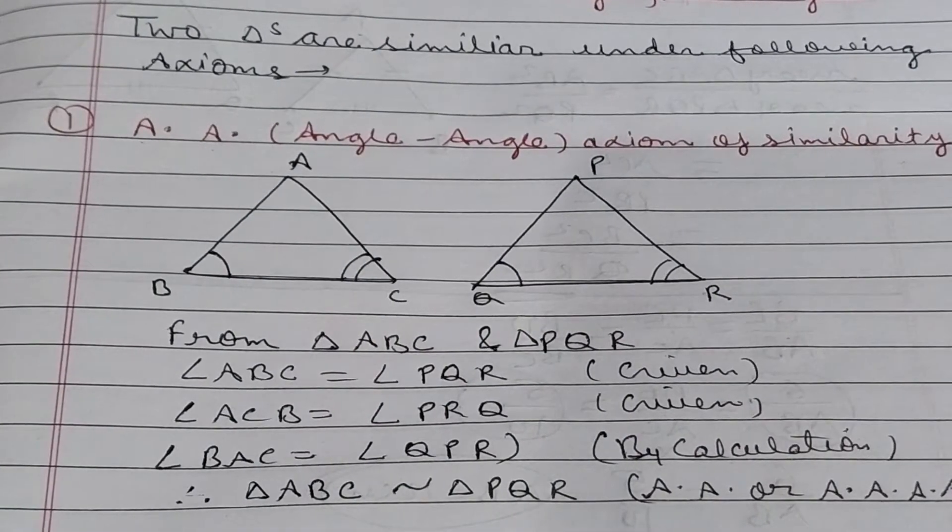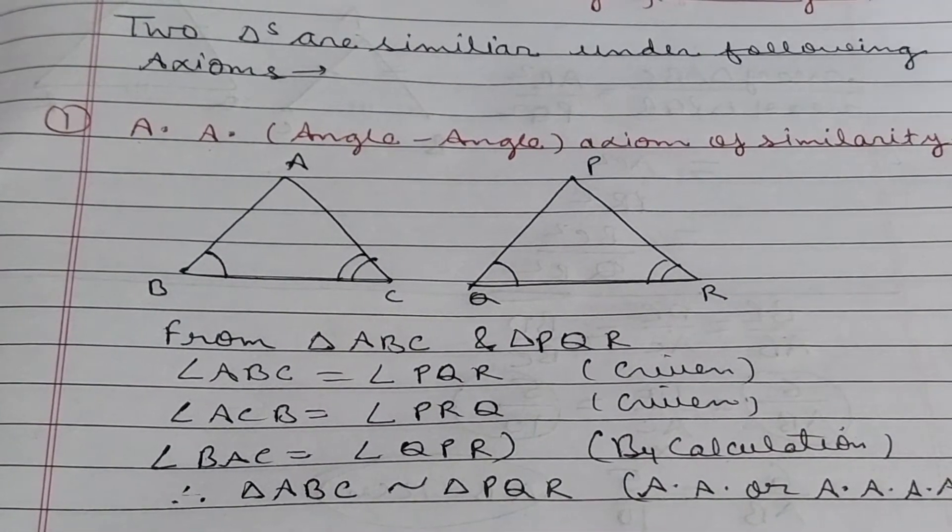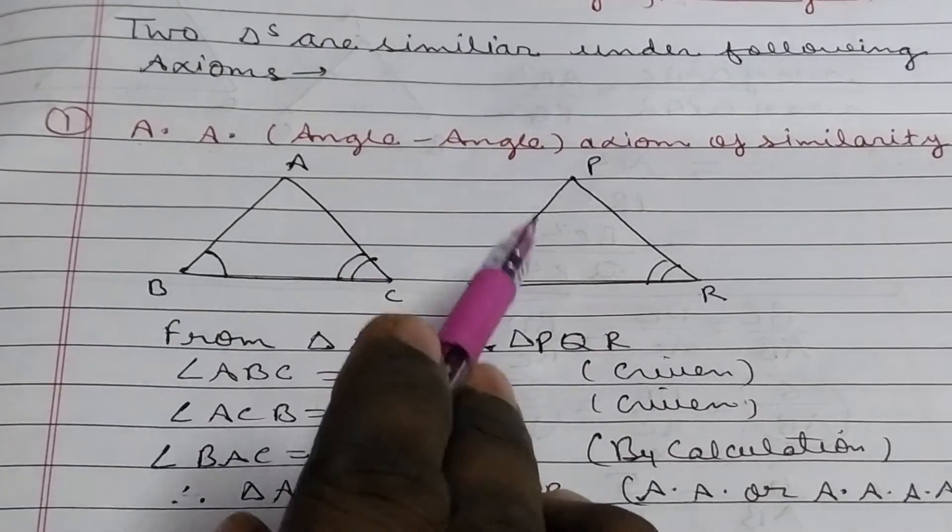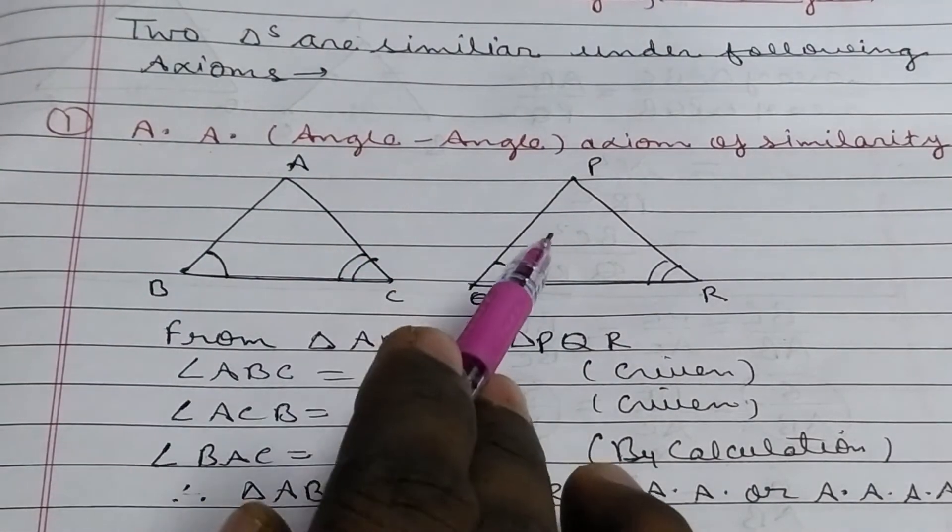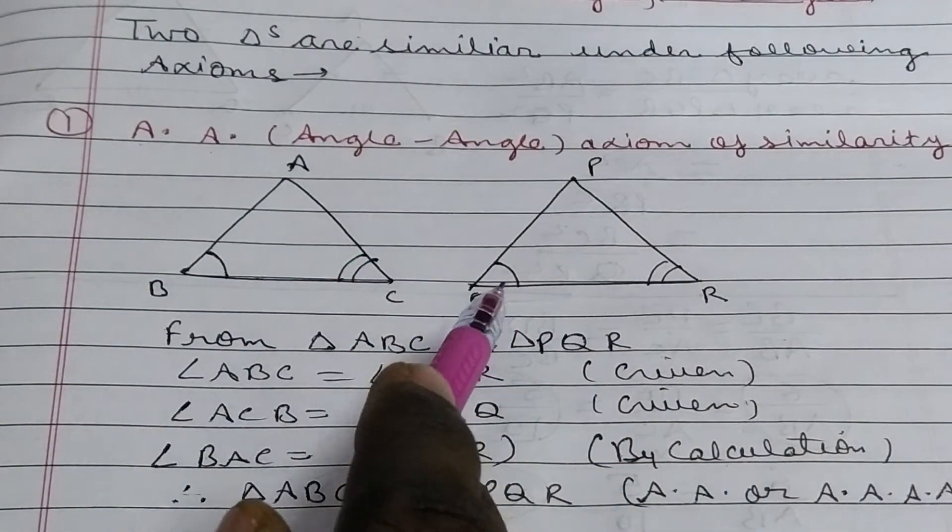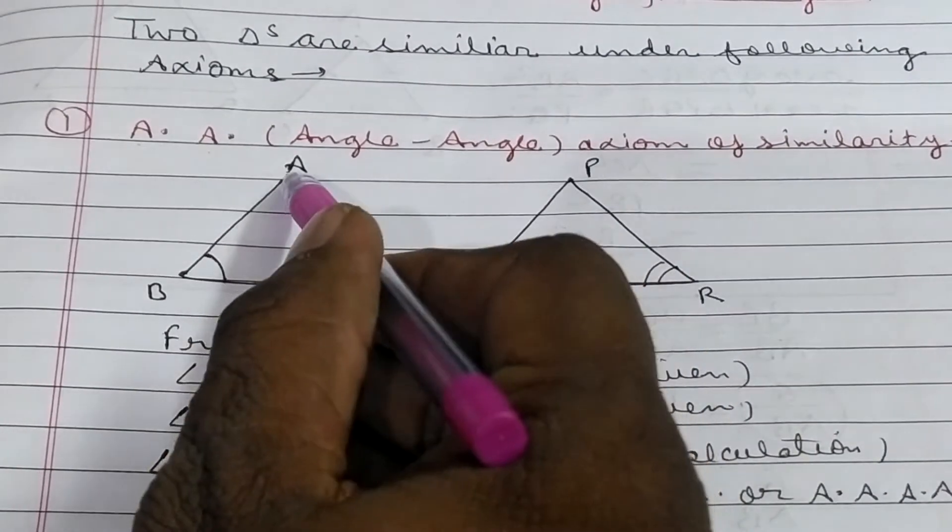In congruent triangle, you have already studied that the sides should be same. But here, it should not necessarily the sides should be same. So, it will be proportional.